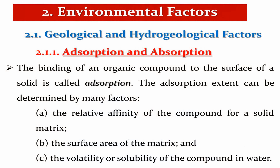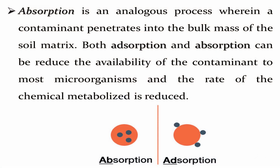These factors include the relative affinity of the compound for a solid matrix, the surface area of the matrix, and the volatility or solubility of the compound in water. The second process is absorption, in which the contaminant can penetrate into the mass of the solid matrix — for example, soil particles. Both adsorption and absorption can reduce the availability of contaminants to microorganisms and also reduce the rate at which the chemical is metabolized.